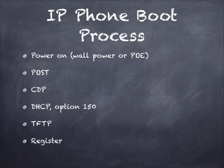Let's move on to the IP phone boot process. When you plug in the phone, it needs to receive power — either from a power brick or from a PoE device over the Ethernet cable. Once it gets power, it goes through a POST (power-on self-test) to check its main systems and start to boot. The first thing the phone does is use CDP (Cisco Discovery Protocol) to receive a message from the switch telling it which VLAN to use. Once it knows its VLAN, it sends its DHCP request out on that VLAN.